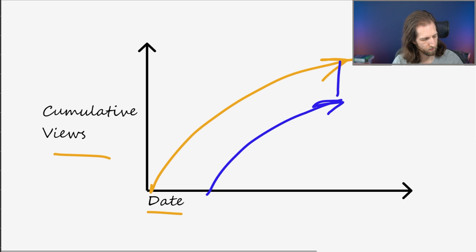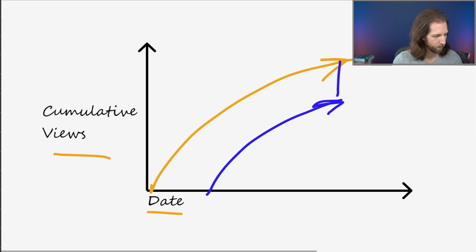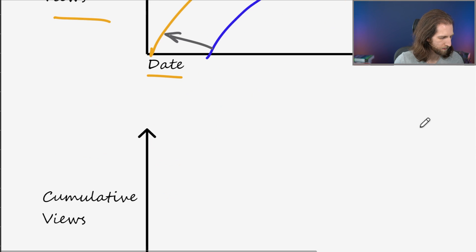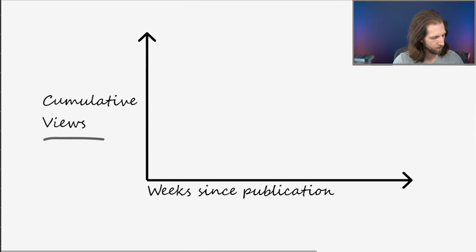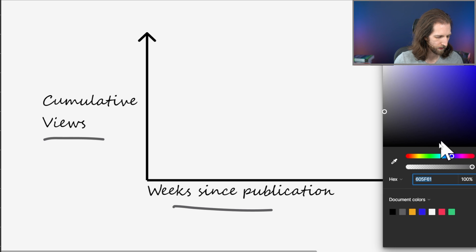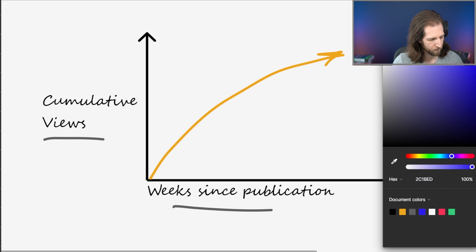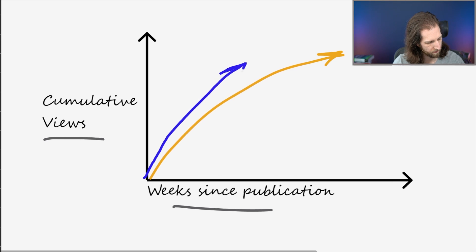So naturally, the orange video has more views, and it's difficult to do a valid comparison. Instead, ideally we would want to overlay these lines so that we are performing a more valid comparison between the two videos. We can do this by looking at the cumulative views for the weeks since publication. So if we redraw the line for the orange video, we can still see its cumulative views, and the blue video line is overlaid on top. It's much easier for us to see that the blue video is performing better compared to the orange video at the same point in time. Let's take a look at the report and walk through how we would set this up, step by step.